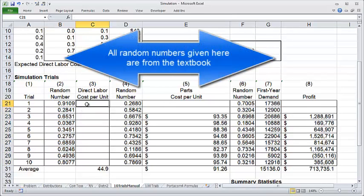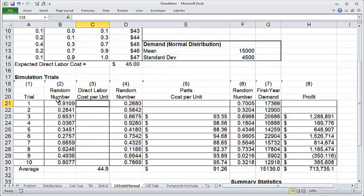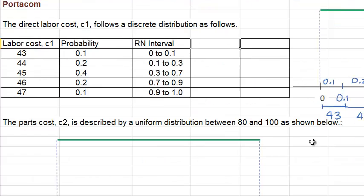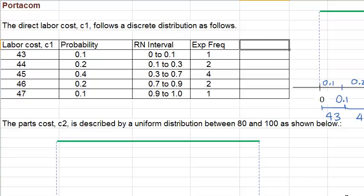The random numbers we use are given here. And here we're going to generate the appropriate number for the labor cost. This simulation has 10 trials. Let's try to guess how many times each value would occur out of the 10 trials. That is, compute the expected frequencies. For 43, it should occur about 10% of the time. Out of 10 trials, that would mean one time. 44 should occur about 20%, which would be 2 out of 10, 45 occurs 4 times, then 2 and 1.